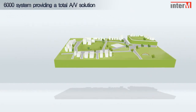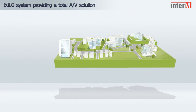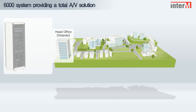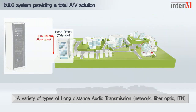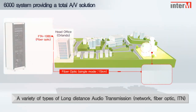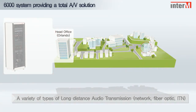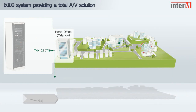The 6000 system can provide a total solution for audio, visual, and sound reinforcement applications. Using a variety of transmission options through TCP/IP, fiber optic, or InterAMPS' exclusive protocol. If coupled with the ITN system, the PX 6216 can be used to control high specification sound reinforcement systems.